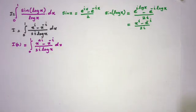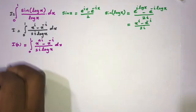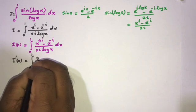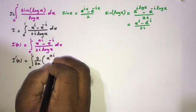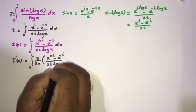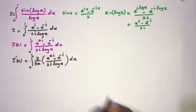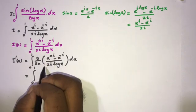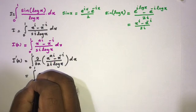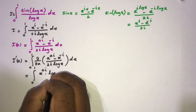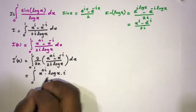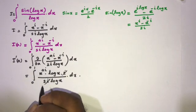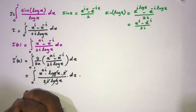I am going to differentiate both sides with respect to a. So I'(a) equals the integral from 0 to 1 of the partial derivative with respect to a of x to the ai minus x to the minus i over 2i times natural log of x dx. Differentiating x to the ai with respect to a gives x to the ai times natural log of x, times i, over 2i times natural log of x.